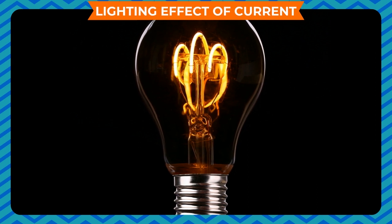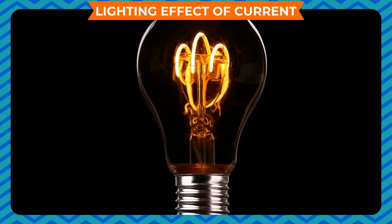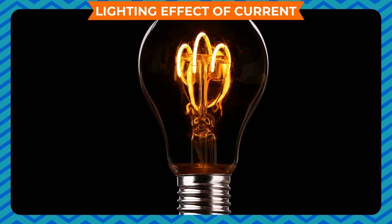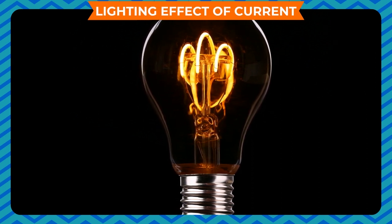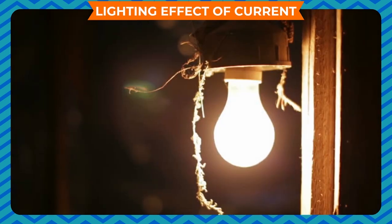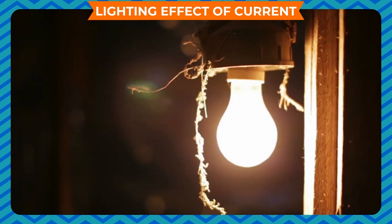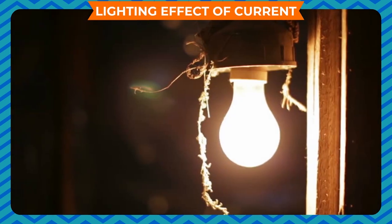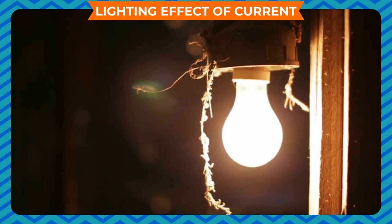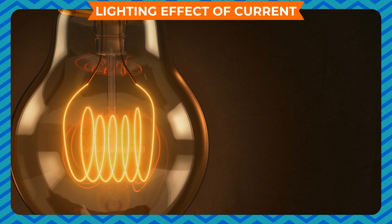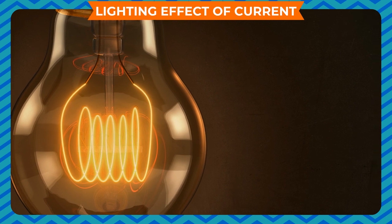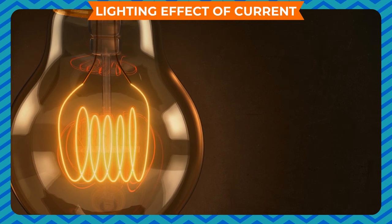Lighting effect of current: when electric current flows through the filament of a bulb, it gets heated up and starts glowing, thereby emitting light. This effect is called the lighting effect of current.